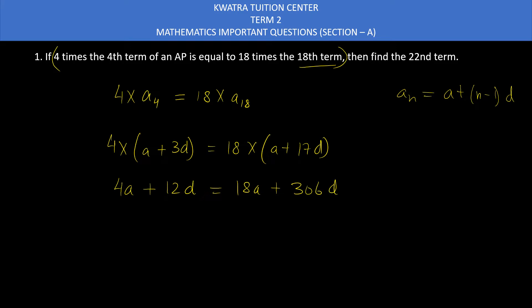Now take A terms to left side and D terms to right side. So 4A minus 18A, then 306D minus 12D. 4A minus 18 gives minus 14A. 306 minus 12 gives 294D. Cancel 14 and 294. If you divide 294 and 14 you get 21, so minus A equals 21D. Take minus A to right side, it gives 0 on the left side. A on right side is 21D. A plus 21D is basically A22. This means the 22nd term is 0. So yes, this is the answer for the first one.